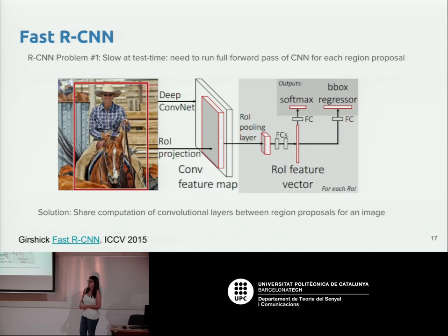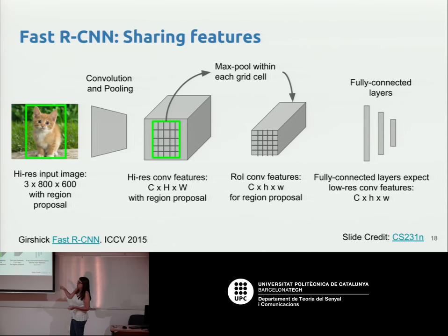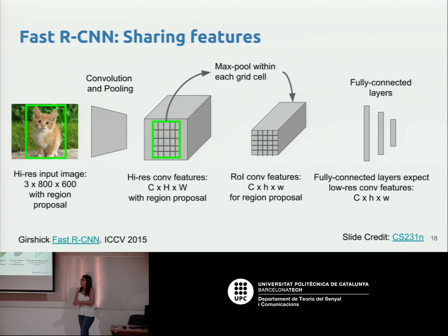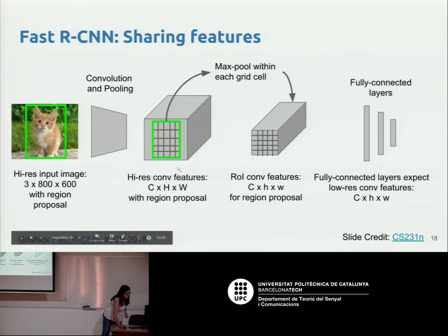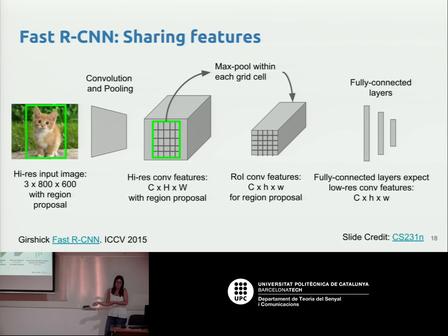They also introduced the concept of ROI (Region of Interest) pooling. Since different proposals have different sizes, descriptors will have different sizes, which is a problem for fully connected layers. ROI pooling places a fixed grid — for example 5×5 — on top of the variable-size descriptor, applies max pooling at each grid position, and thus produces a fixed-size descriptor that can be fed into fully connected layers.